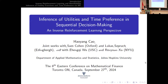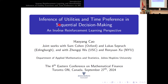As you can see from the subtitle, I'm going to focus a little bit more on the general introduction on a broader topic related to this inferencing utility and time preference problem, which is inverse reinforcement learning. And more precisely, it's about the identifiability issue presented in this general literature of inverse reinforcement learning.